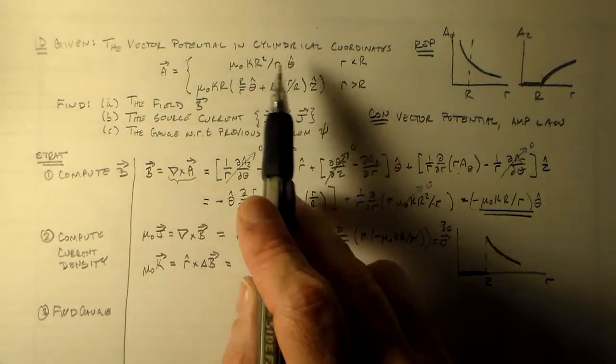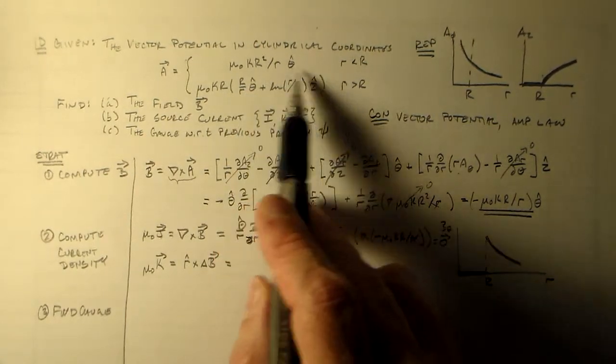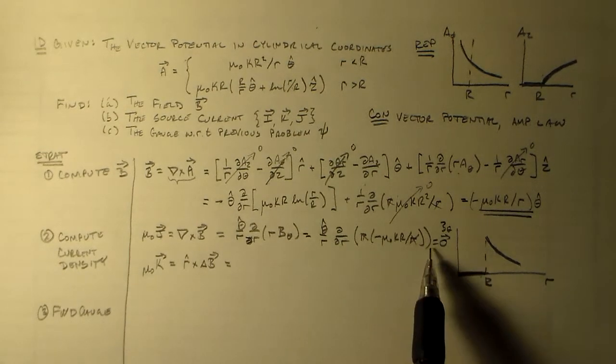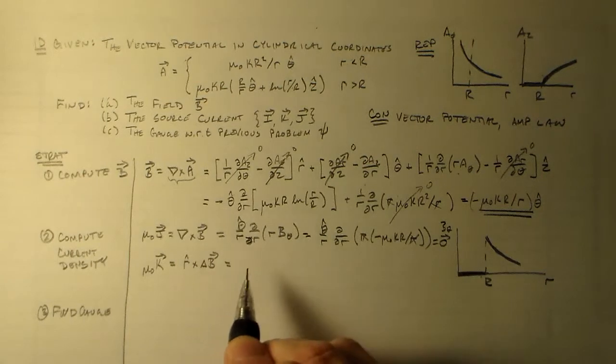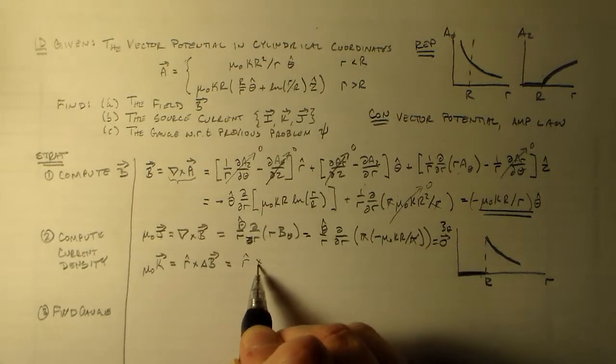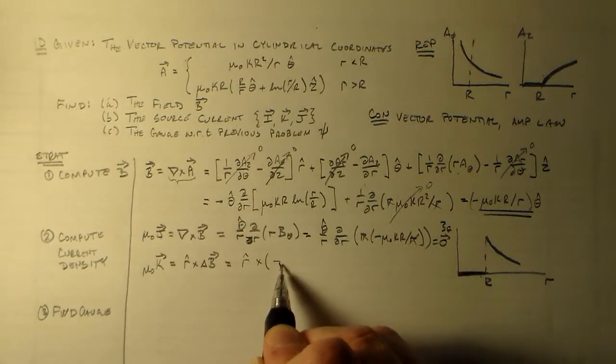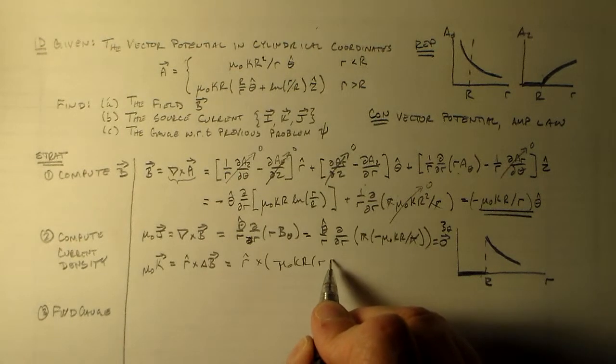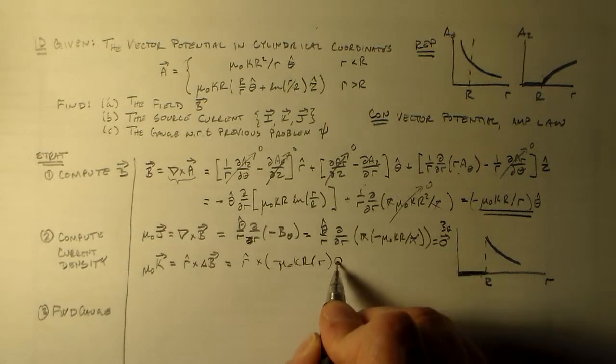And so that is going to be, this part cancels. So it's only in the z direction that we have anything good. Or actually when we come down here, it's in the theta direction. So you have r hat cross minus mu naught k r over r times theta hat.